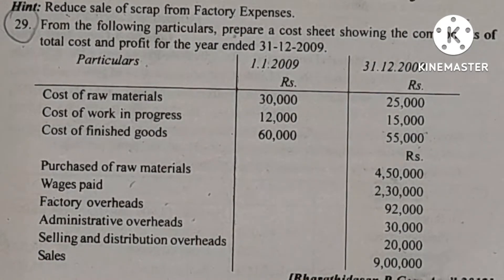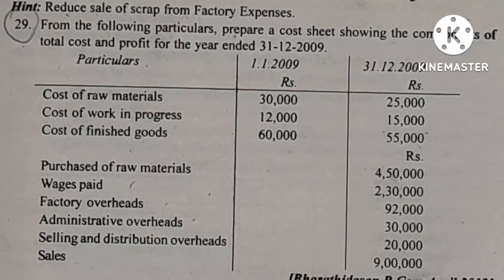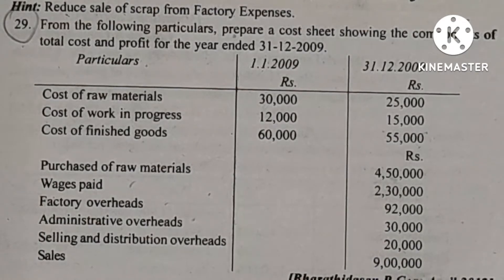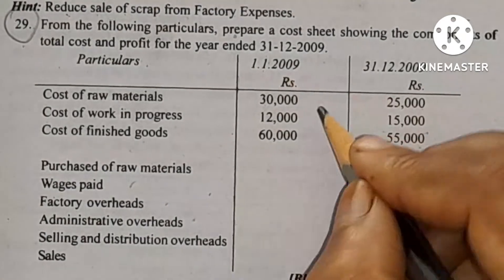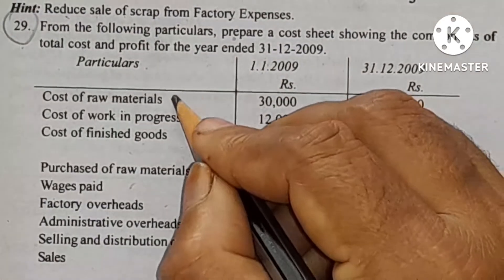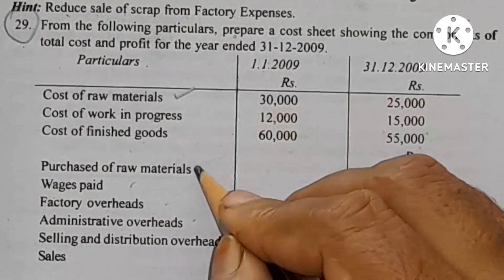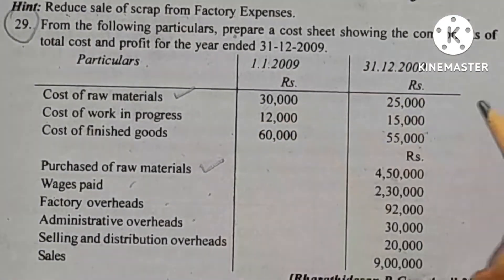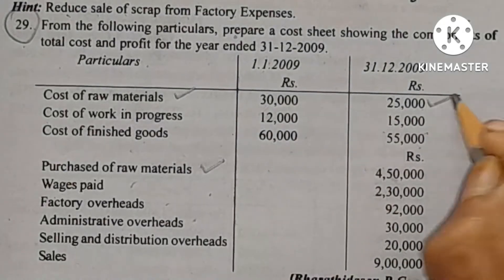As usual, how do we go about it? First, we calculate prime cost. Prime cost begins with opening stock, then add purchases, then deduct closing stock.